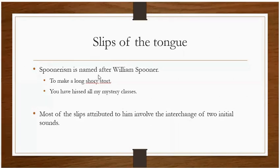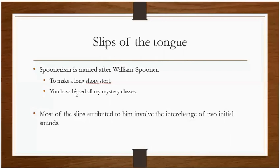These interchanged sounds are caused by a slip of the tongue. Similarly, when you say 'you have hissed all my mystery classes' — the 'iss' sound was supposed to be in 'history' and the 'hist' sound was supposed to be in 'mist'. So it was actually 'you have missed all my history classes', but because of confusion the sounds replaced each other.